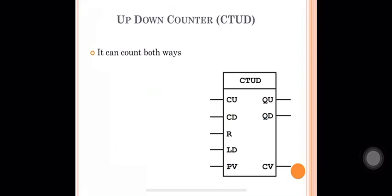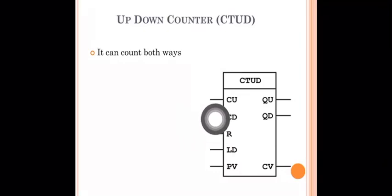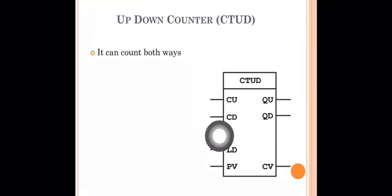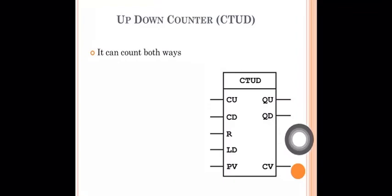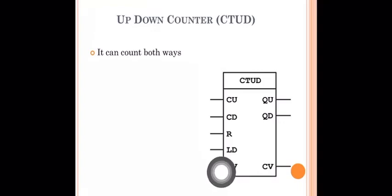Now, the up-down counter. In the up-down counter, we combine both counting directions. It has a CU input for counting up and a CD input for counting down. The output QU is the up counter output and QD is the down counter output. The other parameters — PV (preset value), LD (load), R (reset), and CV (current counter value) — remain the same.